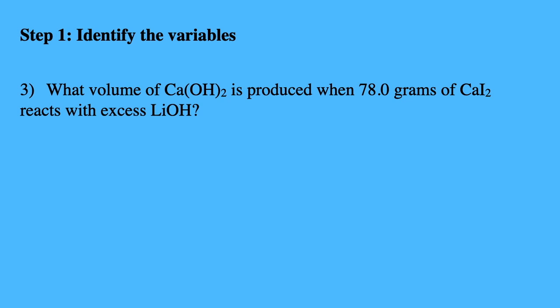Identify the variables. When we identify the variables, we start with what's given. So what's given is 78 grams of CaI2. What we are solving for is volume of CaOH2.